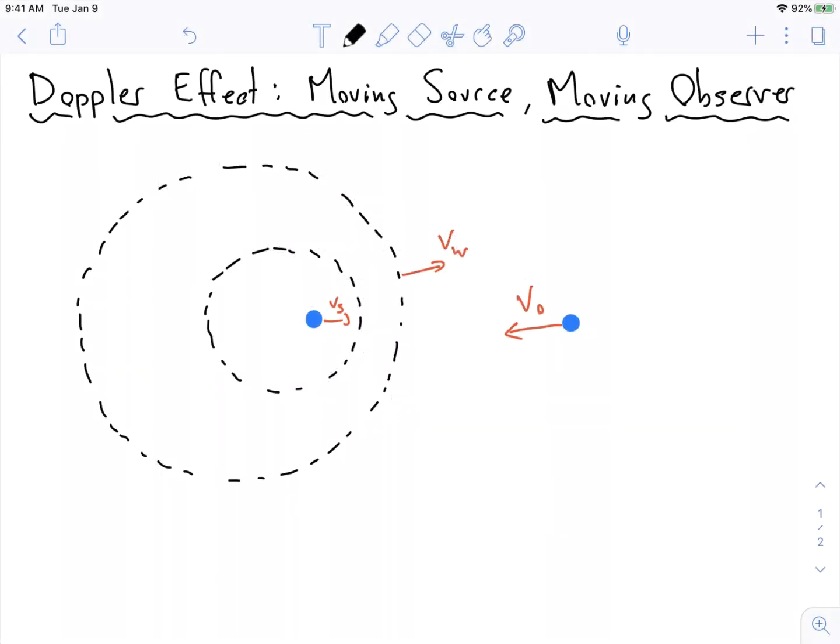Here I've drawn a moving source with its wave fronts, just to remind us what the wave fronts look like, and a moving observer that's moving towards it in this case, but it doesn't have to be.